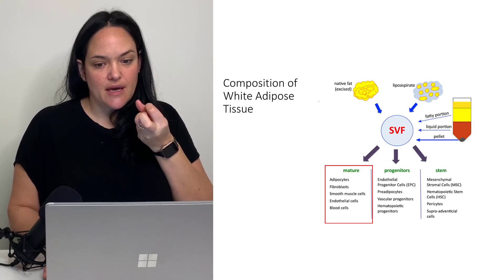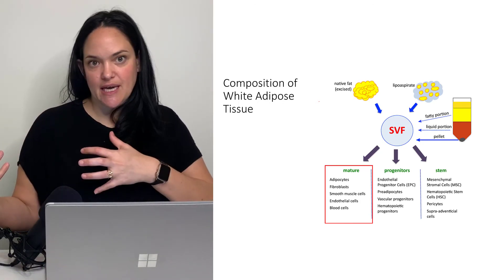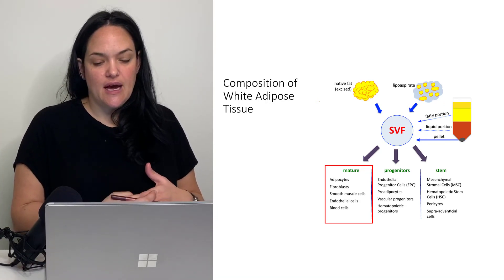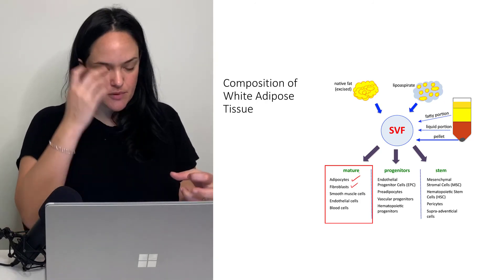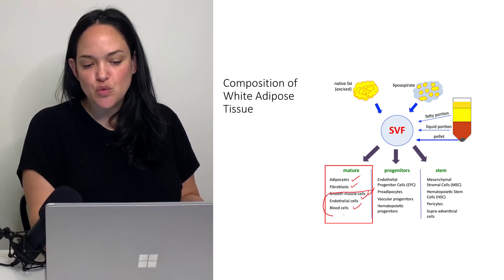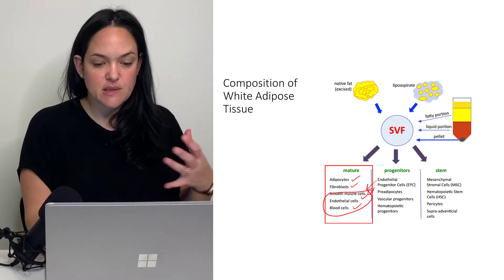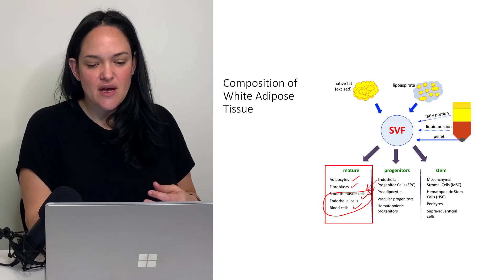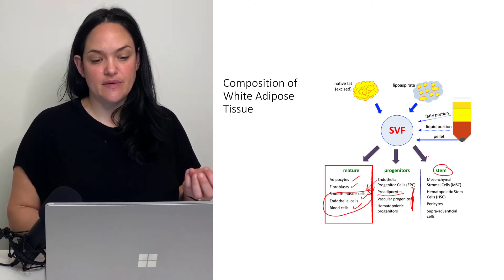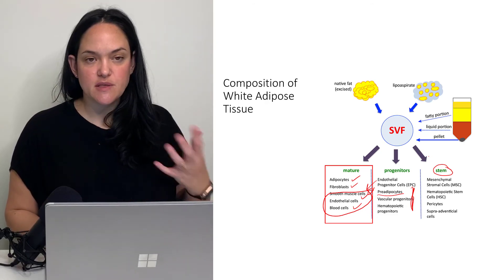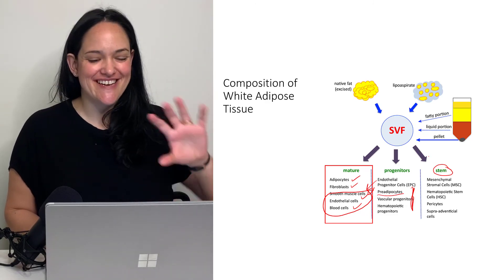If you were to isolate adipose tissue and separate it into its components, you'd find different cell types. Mature cells include adipocytes, fibroblasts that produce the collagen fibers linking adipocytes, smooth muscle cells, endothelial cells, and blood cells — all part of the vascular system. You'd also find progenitor cells like endothelial progenitor cells and pre-adipocytes, as well as stem cells. The majority of active adipose tissue function comes from mature cells, while progenitors and stem cells differentiate to replenish them.